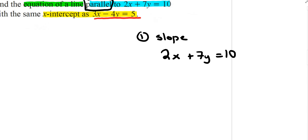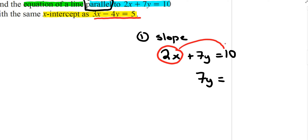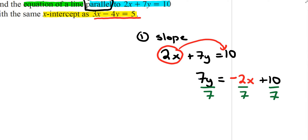To find the slope of 2x plus 7y equals 10, isolate the y term. Moving 2x to the other side gives negative 2x plus 10, then dividing both sides by 7, the 7s cancel and I get y equals negative 2 over 7x plus 10 over 7.